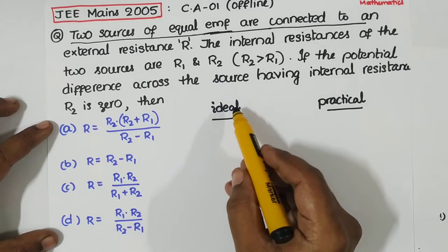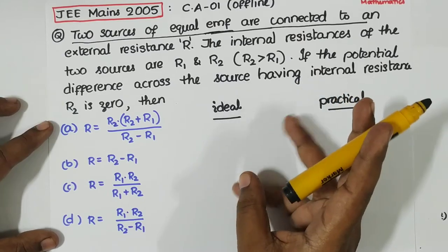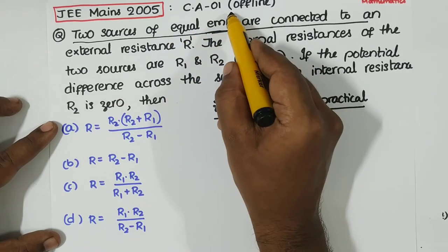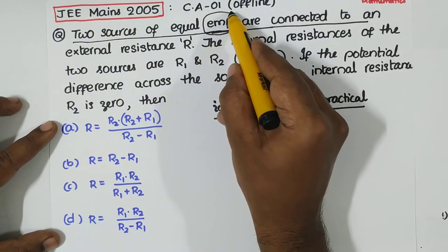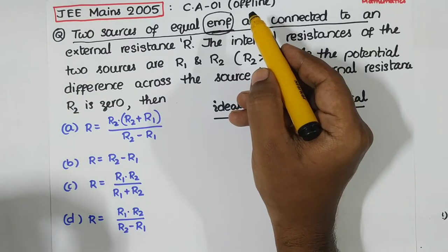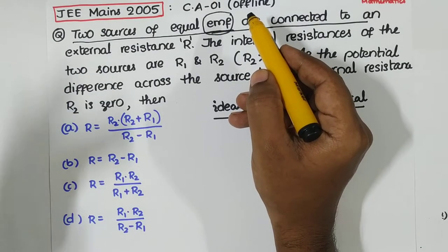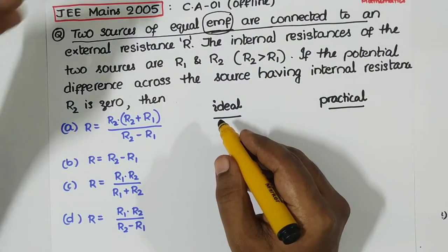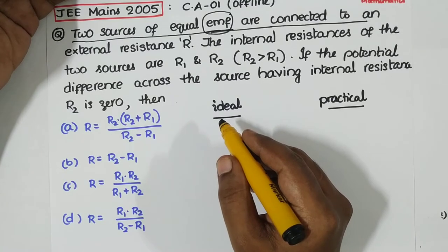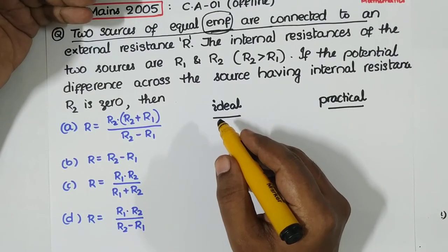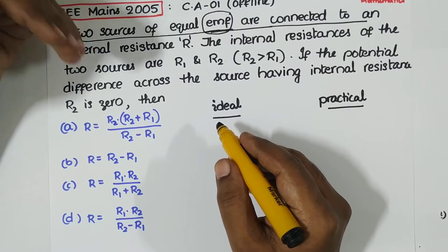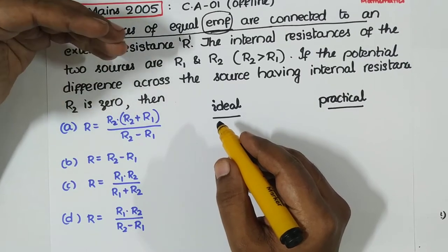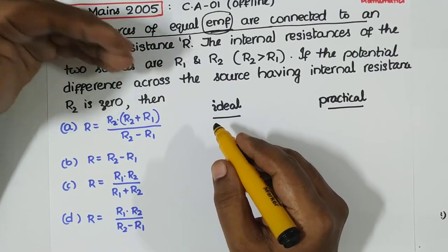This is very simple to solve. Let us divide this problem into two parts: the ideal case and the practical case. Two sources of equal EMF — EMF means electromotive force, or rising voltage, the voltage source which is supplying energy. We always have rising voltage and potential drop. Whenever you have rising voltage, current always flows from minus to plus through that voltage source. Whenever we have potential drop, current always flows from plus to minus through that element.